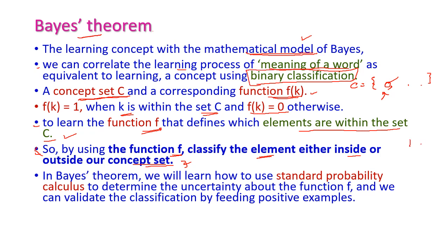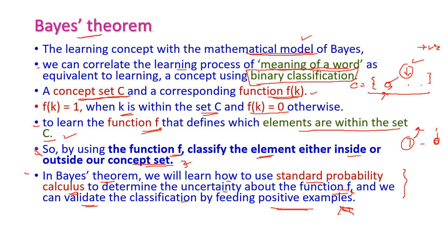Binary classification means either 1 or 0. 1 means the word is inside the set; 0 means the word is not inside the set. In Bayes theorem, we will learn how to use standard probability calculus to determine the uncertainty about the function f. We can validate the classification by feeding positive examples. Suppose if the word is similar to that particular object, this is called a positive example. By feeding more number of positive examples, the machine can easily learn that particular concept.